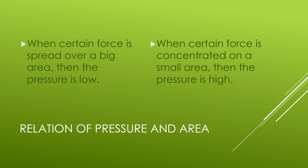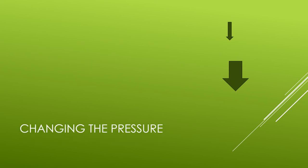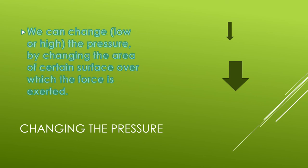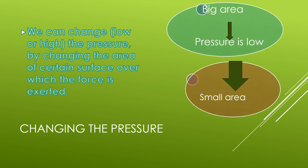We use force to exert the pressure. How can we change the pressure? We can change, it means we can lower or higher the pressure by changing the area of the certain force over which the force is exerted. Big area pressure is low and on the small area the pressure is high. It means we can change the pressure when we change the area of exerting force.